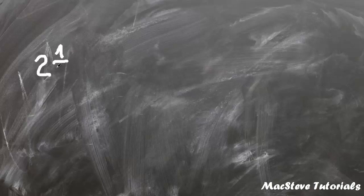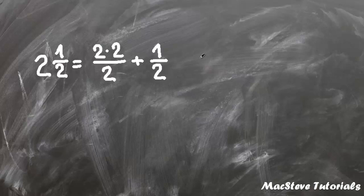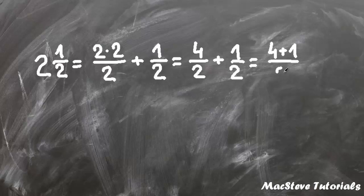We have 2 and 1 half. First step is to multiply 2 by 2 and by doing so we get 2 times 2 over 2 plus 1 half. Now this is same as 4 halves plus 1 half. This equals to 4 plus 1 over 2, which is 5 halves.